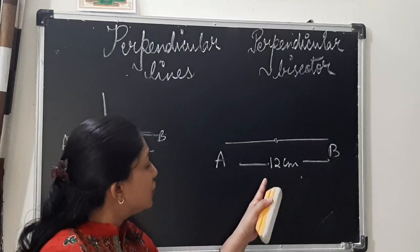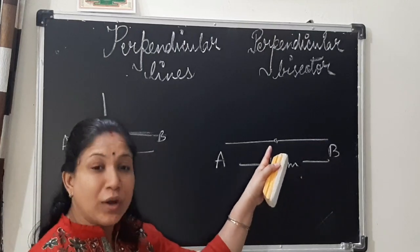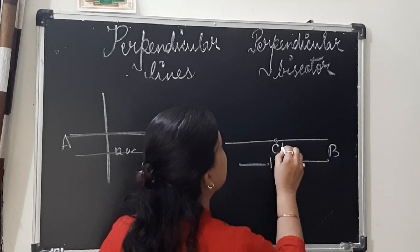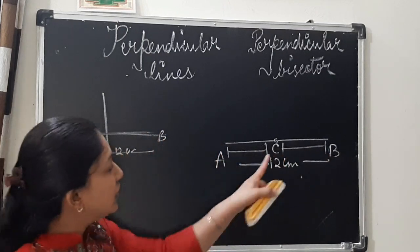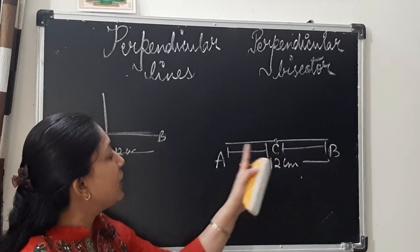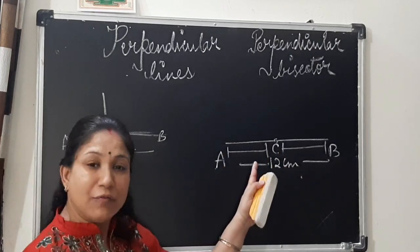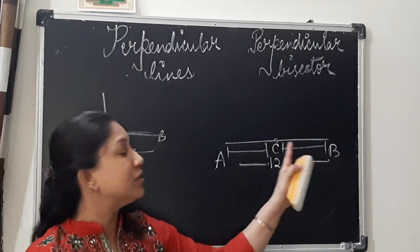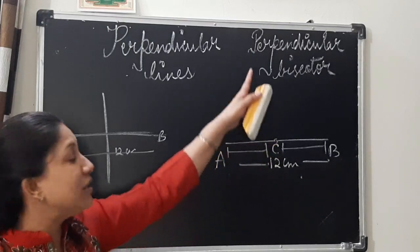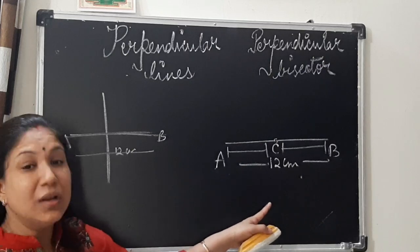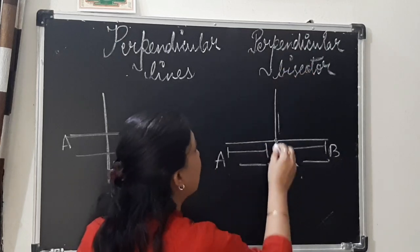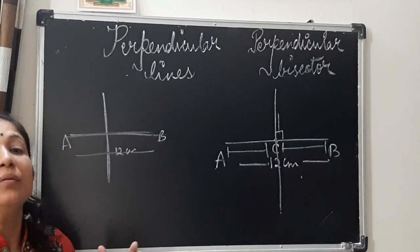So, AB is a line segment whose measurement is 12 centimeters. The midpoint of line segment AB is at point C, which divides the line into two equal halves. If you measure AC, it is half of the line segment, and CB is also half of the line segment. So, point C divides the line segment into equal halves. If you drop a perpendicular at right angle through this midpoint C only, then it is called a perpendicular bisector.